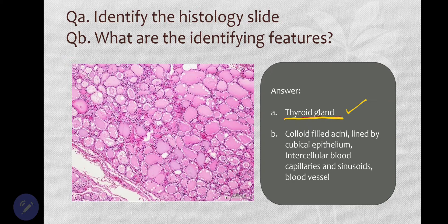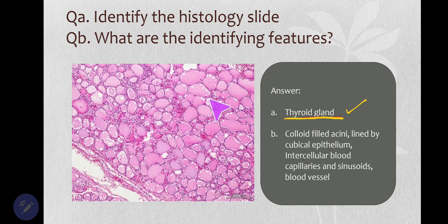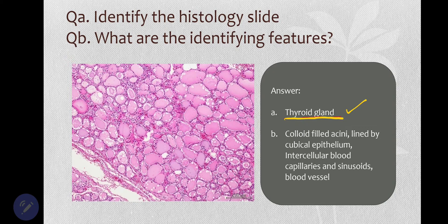First of all, look — there are so many acini, and these acini are filled with a pink colloidal matrix. This colloidal matrix takes on a good eosinophilic stain, so they all appear pinkish.